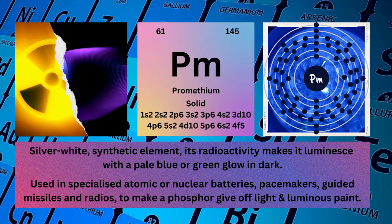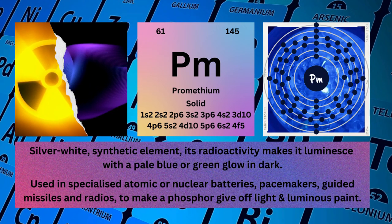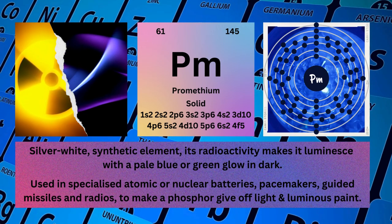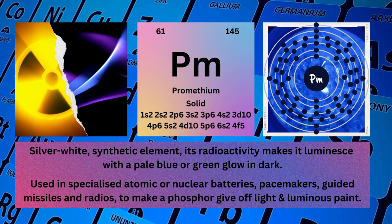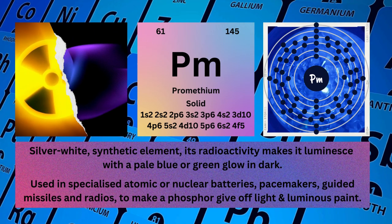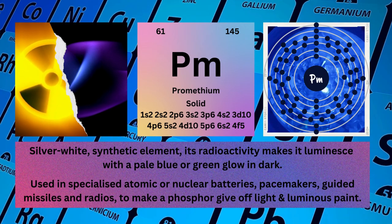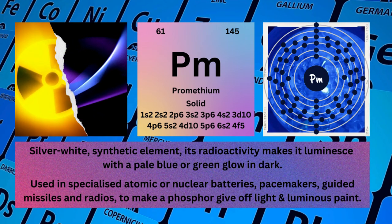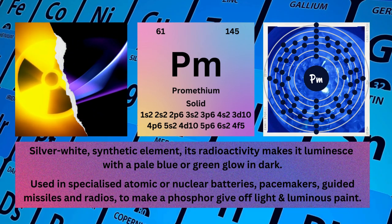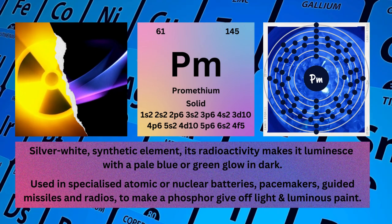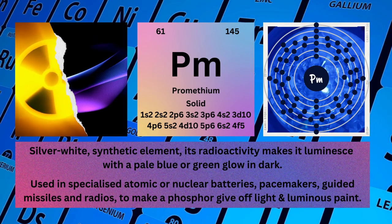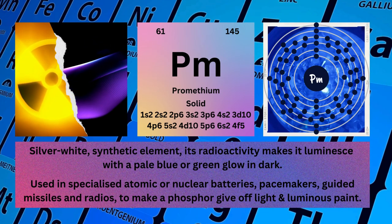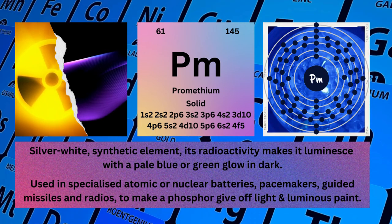Electronic configuration: 1s²2s²2p⁶3s²3p⁶4s²3d¹⁰4p⁶5s²4d¹⁰5p⁶6s²4f⁵. Physical properties: Silver-white, synthetic element; its radioactivity makes it luminous with a pale blue or green glow in the dark.